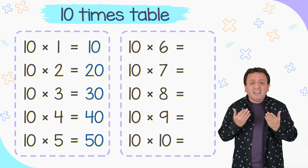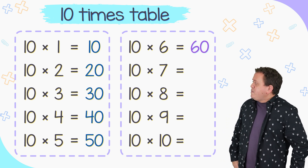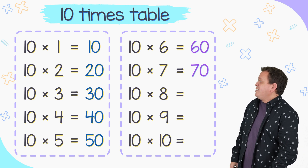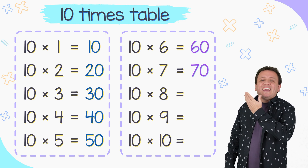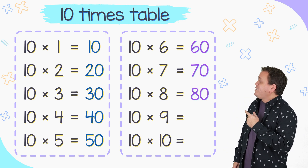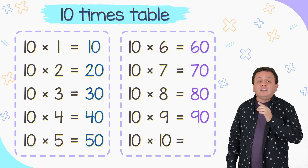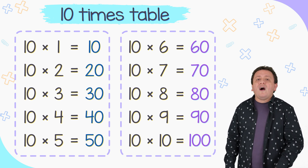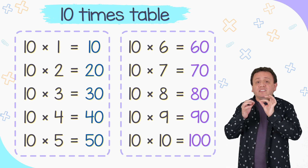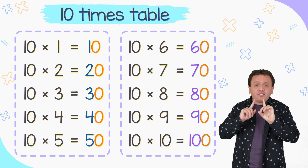10 times 6 equals 60. 10 times 7 equals 70. 10 times 8 equals 80. 10 times 9 equals 90. Finally, 10 times 10 equals 100. All the products in the 10 times table end with 0, and there is no other choice.